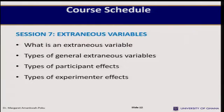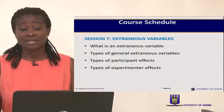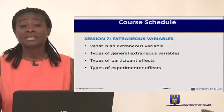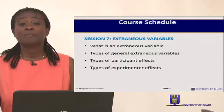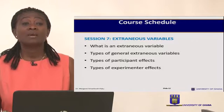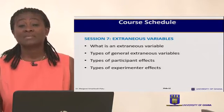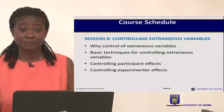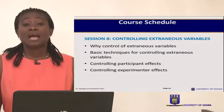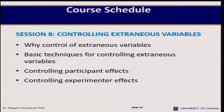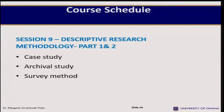In Session 7, I'll talk about extraneous variables — variables in an experiment that are not of interest to the experimenter but can affect the outcome of a study. As a researcher, you need to control these. I'll categorize them into three types: general extraneous variables, participant effects, and experimental effects. Session 8 will then cover how to control these extraneous variables using basic control techniques and methods for controlling participant and experimental effects.